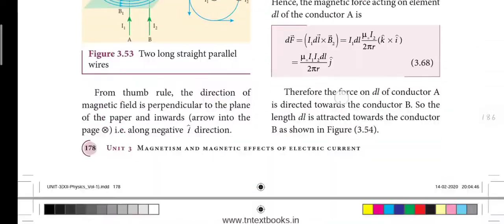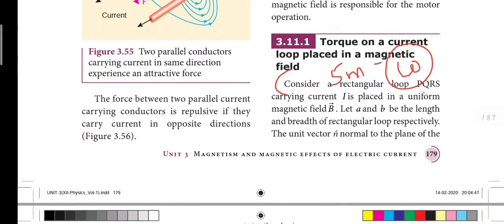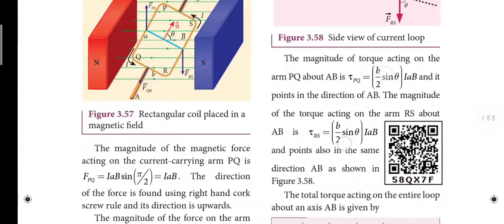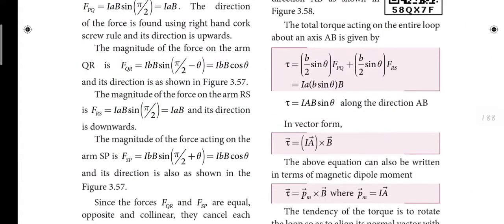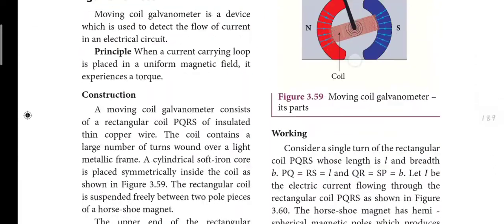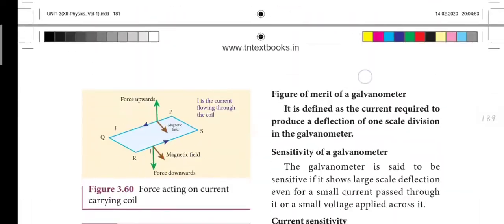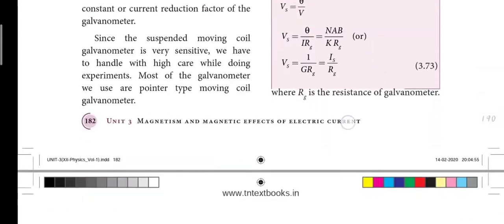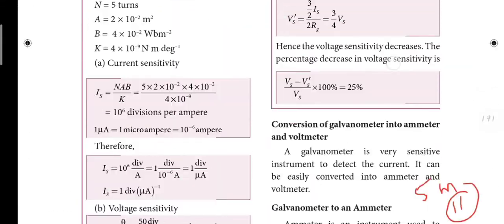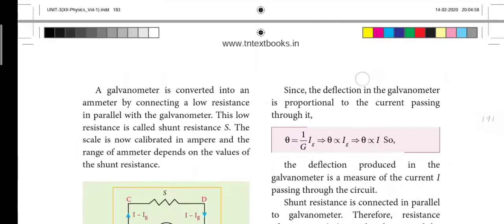Next is the force on a current loop placed in a magnetic field — the 10th five-mark question — with the torque equation and special cases. Then, the moving coil galvanometer — construction, working, and principle — followed by conversion of the galvanometer into an ammeter and voltmeter, which is a simpler answer worth 3 or 5 marks.